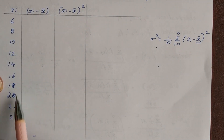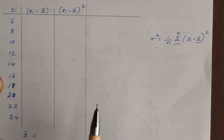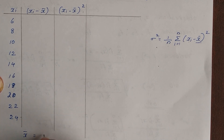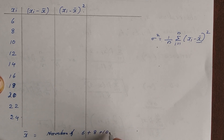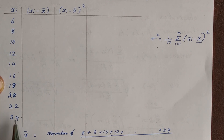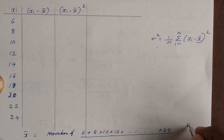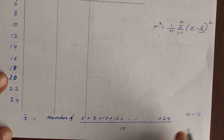This is ungrouped data. The mean x bar is found by dividing the sum of observations by the total number of observations. We compute: 6 plus 8 plus 10 plus 12 plus ... plus 24, the whole divided by n, where n equals 10. So we divide by 10.